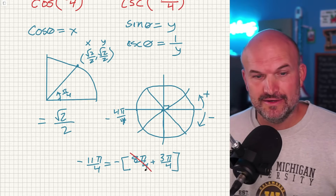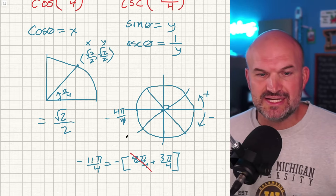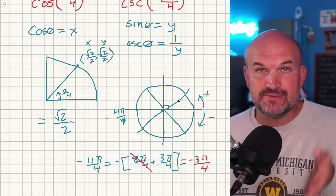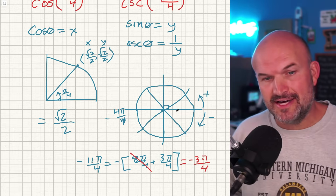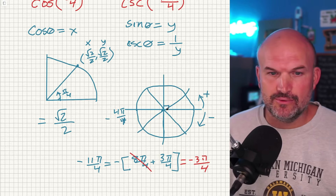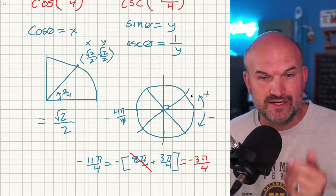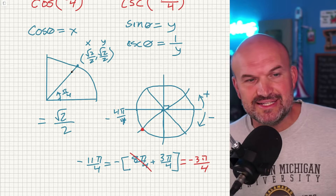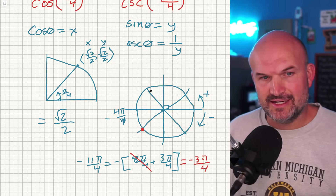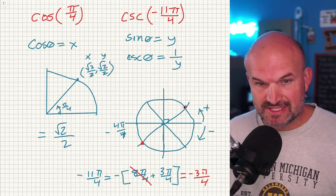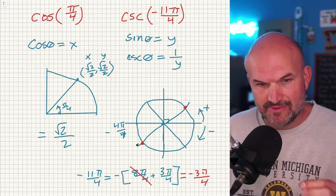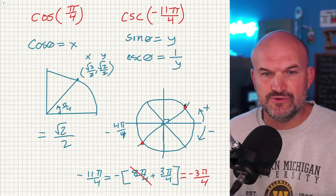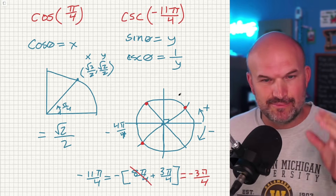So going clockwise three steps of π/4 lands us in the third quadrant. Now I want you to notice something: when we did π/4, that point was in the first quadrant. These points are symmetrical — actually a reflection about the origin. The first quadrant point is (√2/2, √2/2). If you reflect about the y-axis, x becomes negative (second quadrant). Reflect again about the x-axis, and both x and y are negative.